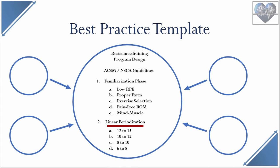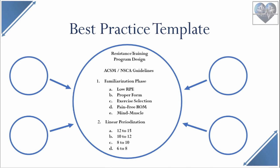You move from the initial 10 repetitions per set into the 12-15 repetition range, which is considered the light loading domain. Stay there for a phase, then drop to the 10-12 and 8-10 repetition ranges, which are considered moderate loading domains, and then drop to the 6-8 repetition range, which is considered the upper end of the heavy loading domain. This is a common sense way to follow the ACSM and NSCA guidelines to train across the 6-15 repetition spectrum, which is the suggested continuum to develop general strength fitness.